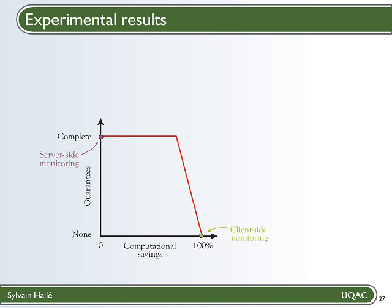Now, remember the graph I've shown you in the beginning where we plotted client-side and server-side monitoring according to the guarantees they give to the server versus the computational savings. I said that if there was a plateau at the top left of the plot, this is the area that presented potential for cooperative monitoring. What we discovered from the experiments is that there is indeed a plateau, and this plateau goes as far as right as 90% of computational savings before leaving the horizontal line of complete guarantees. This is just another way of representing what I just said.